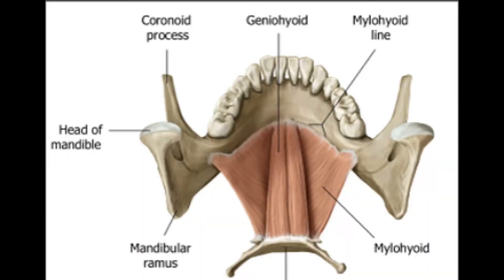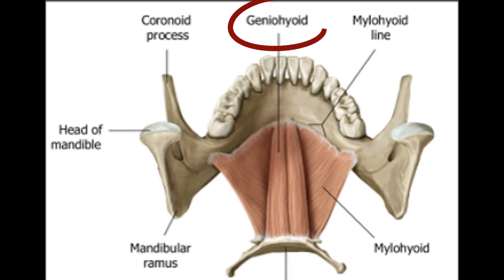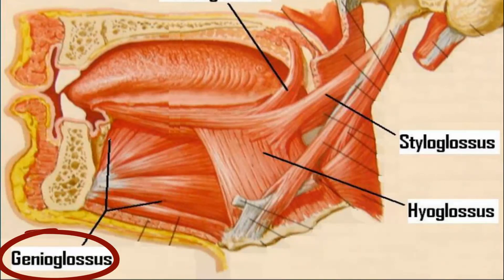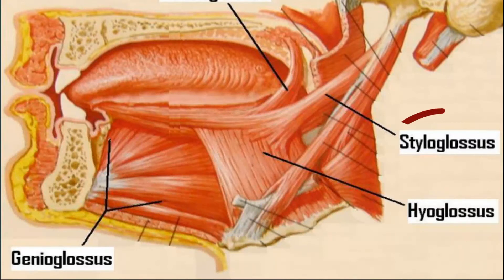Starting with the hyoid muscles: M is for mylohyoid muscle — hyoid because it attaches to the hyoid bone. G is for geniohyoid muscle. Moving on to the glossus muscles: G for genioglossus, H for hyoglossus, and S for styloglossus.